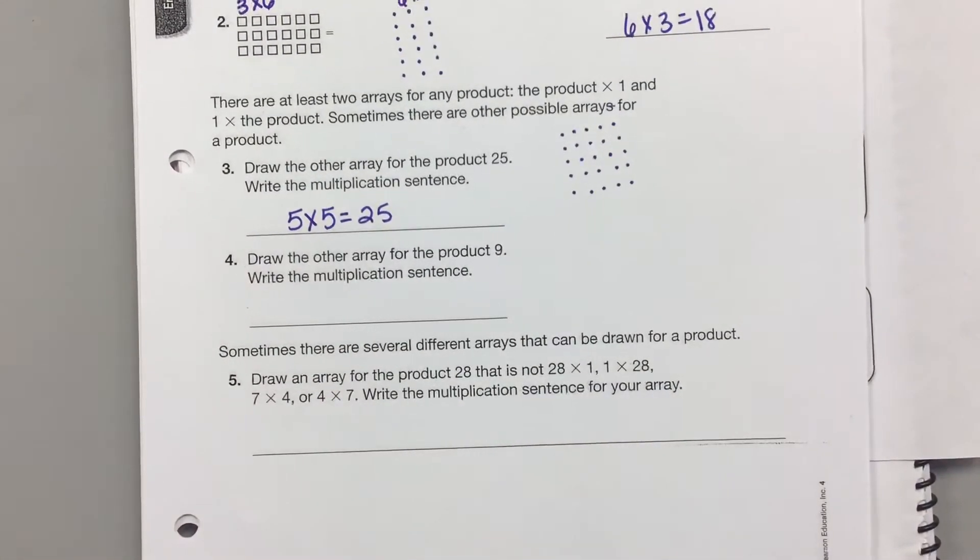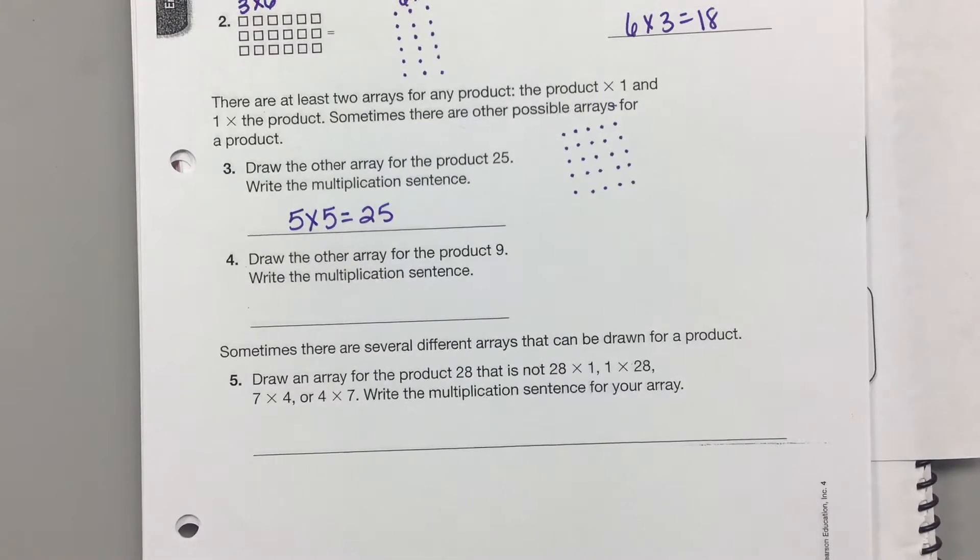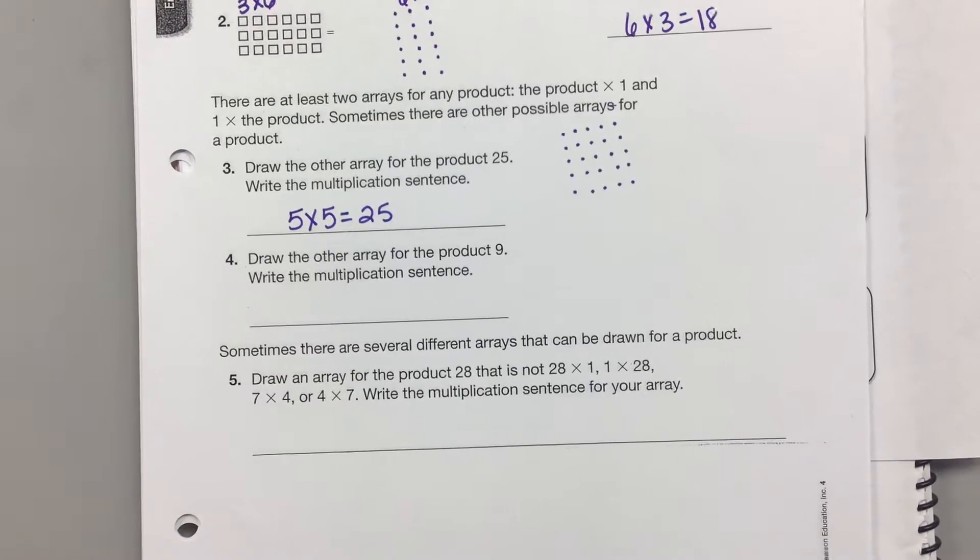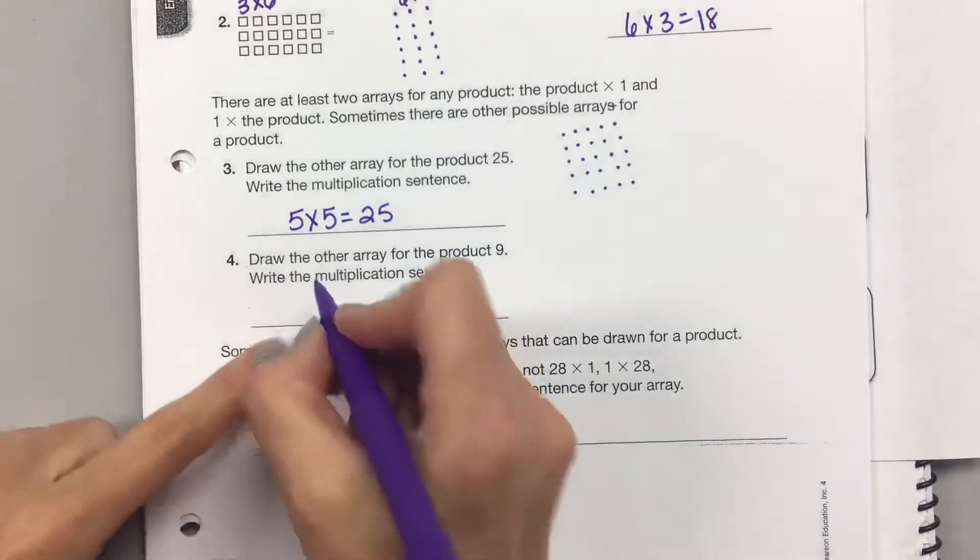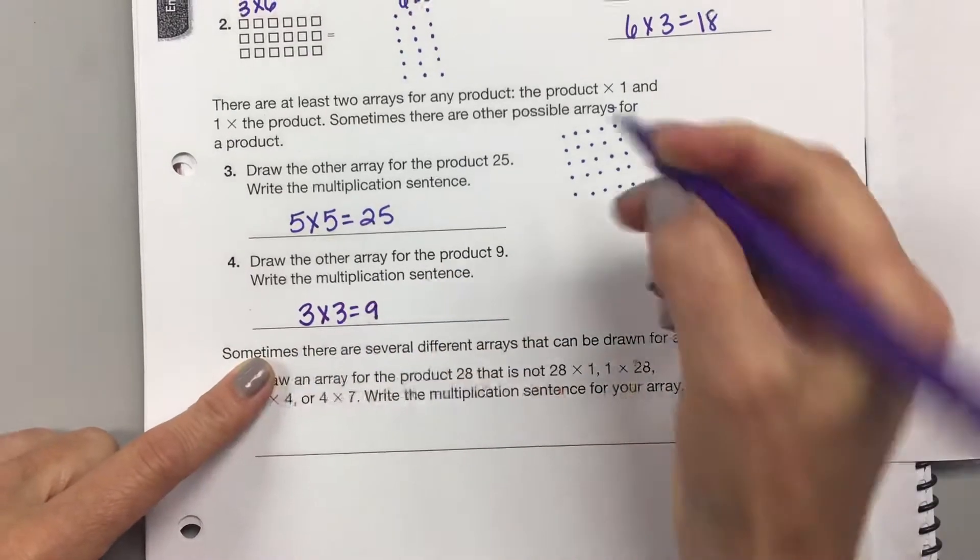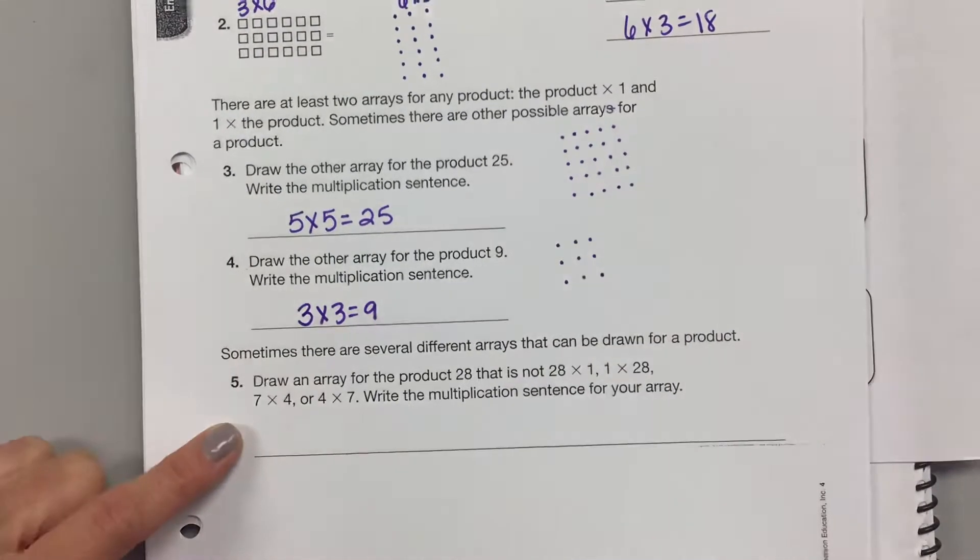What about for nine? We could do one row of nine. We could do nine rows of one. Or what's the other way we could do it? Carter, what else could we do to get the product of nine? One times nine, nine times one, or? What else could I multiply to get nine? Three times three. So I need three rows, and I need three in each row.